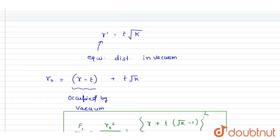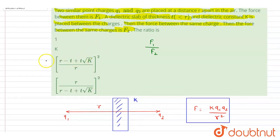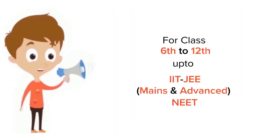If you see, it is r minus t plus t under root k by r whole square. That is C. C is the correct one. Thank you.